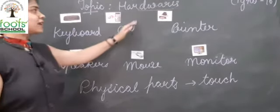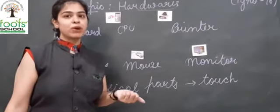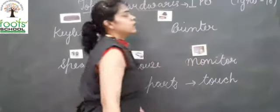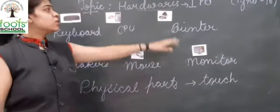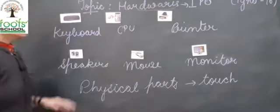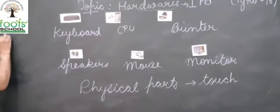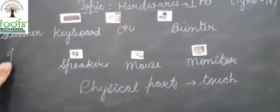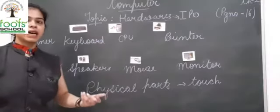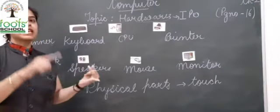Hardware devices are also classified into three types — that is the IPO type: input, processing, and output. We have been given six devices, and we can add one more device such as scanner, joystick, or microphone. We have to classify them as input, processing, or output.